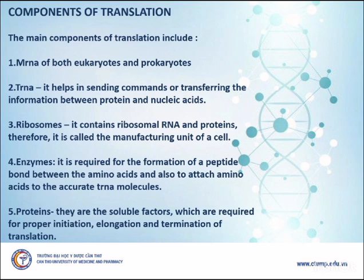Components of Translation. The main components of translation include mRNA of both eukaryotes and prokaryotes. tRNA helps in transferring information between proteins and nucleic acids. Ribosomes contain ribosomal RNA and proteins, and are therefore called the manufacturing unit of a cell. Enzymes are required for the formation of peptide bonds between amino acids and to attach amino acids to the accurate tRNA molecules. Proteins are the soluble factors required for proper initiation, elongation, and termination of translation.